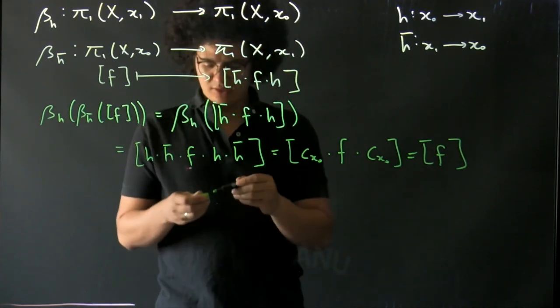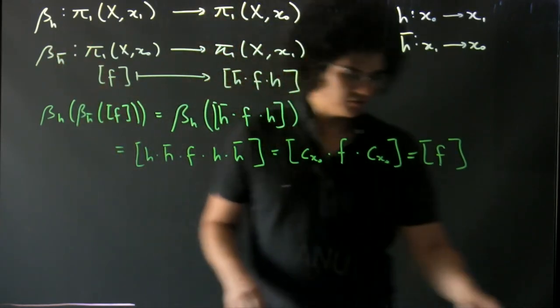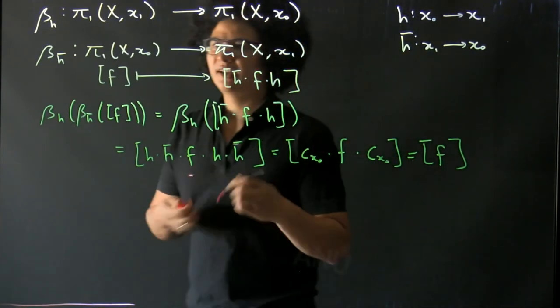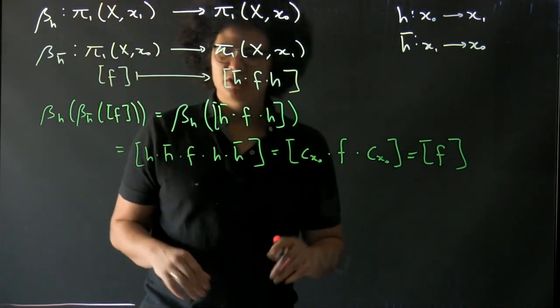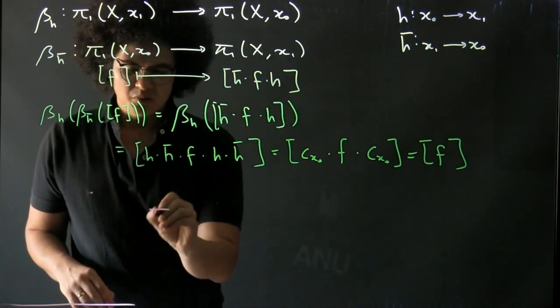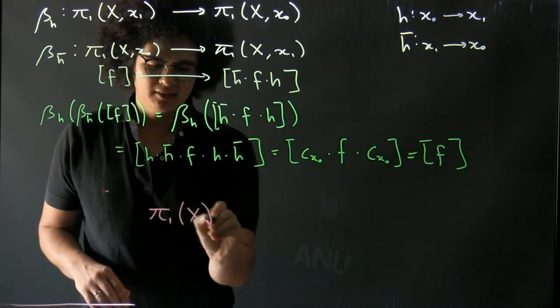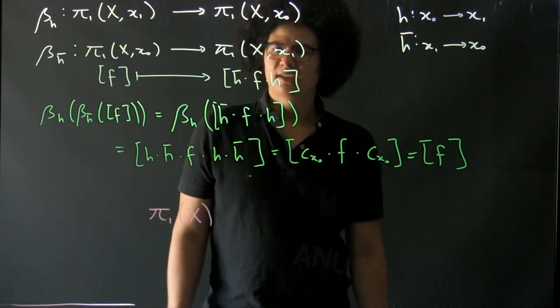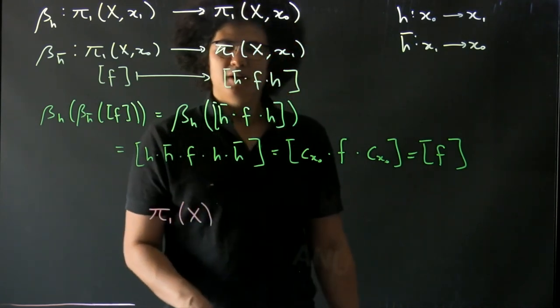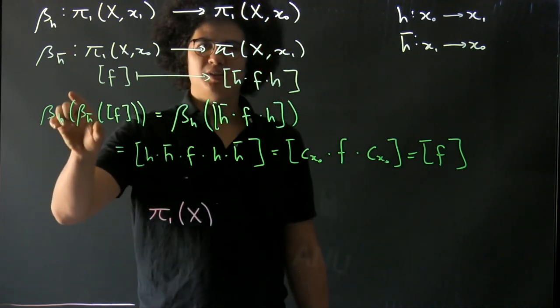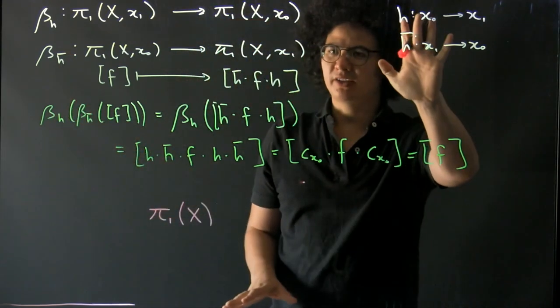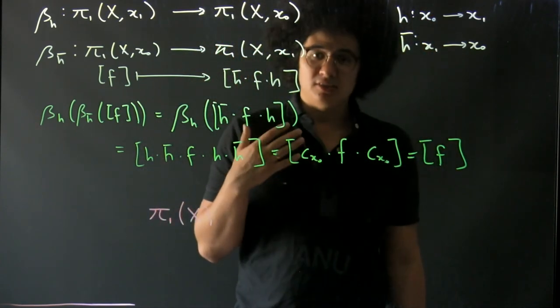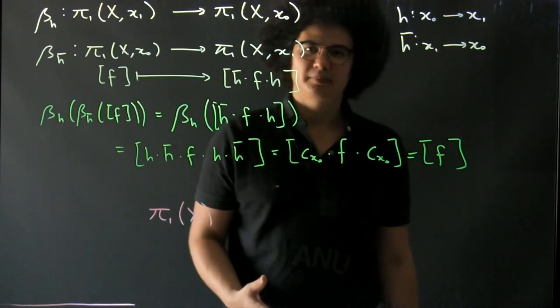So in general when you have a space that's path-connected, we'll just write π₁ of X and leave out the base point. But I want to stress that these isomorphisms are determined by these paths, and for different choices of paths you can get different isomorphisms.